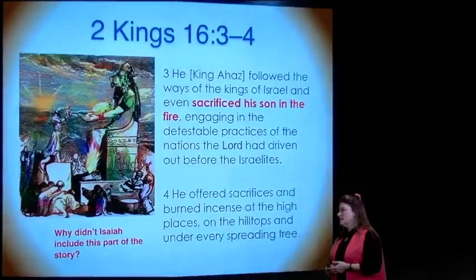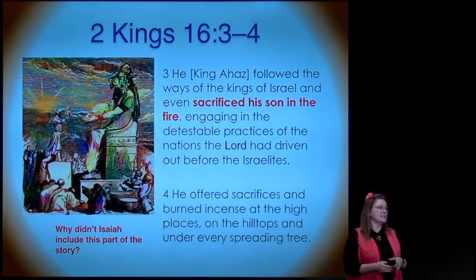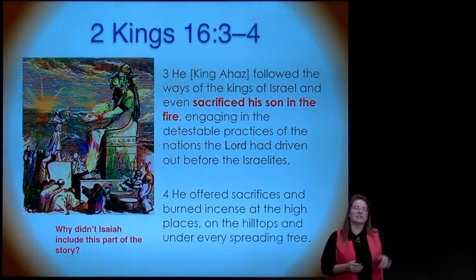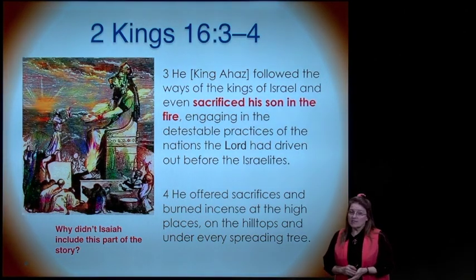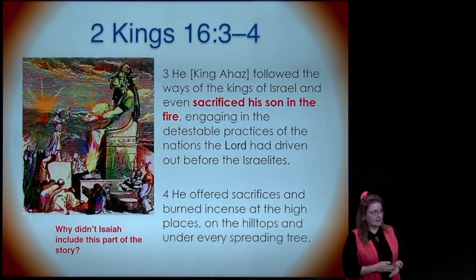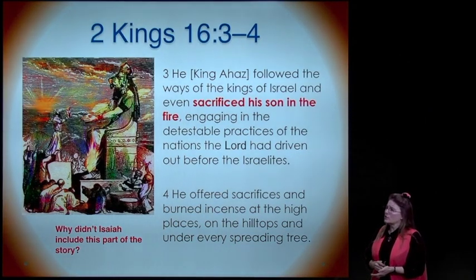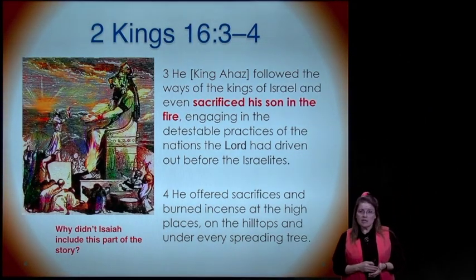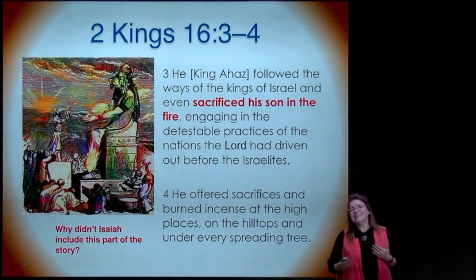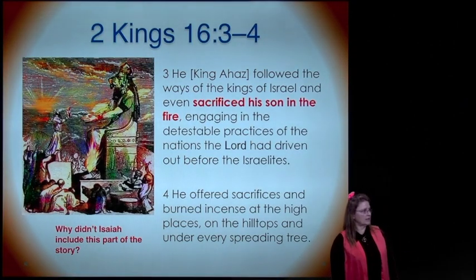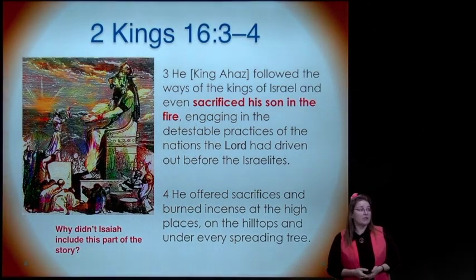We're going to look at King Ahaz, who was the father of King Hezekiah. Going back to 2 Kings—not 1 Kings as I said last lesson—he followed the ways of the kings of Israel, even sacrificing his son in the fire, engaging in the detestable practices of the nations, offering sacrifices and burnt incense at the high places and under every spreading tree. Why didn't Isaiah tell us what a bad guy King Ahaz was?